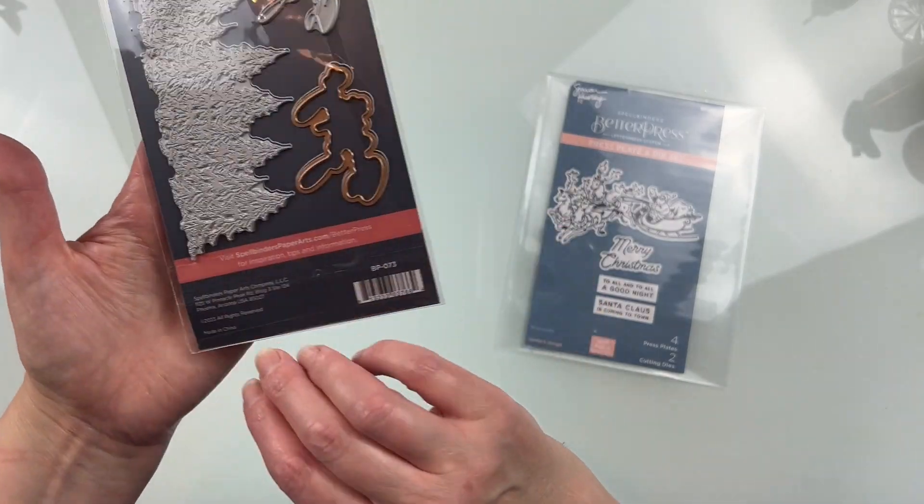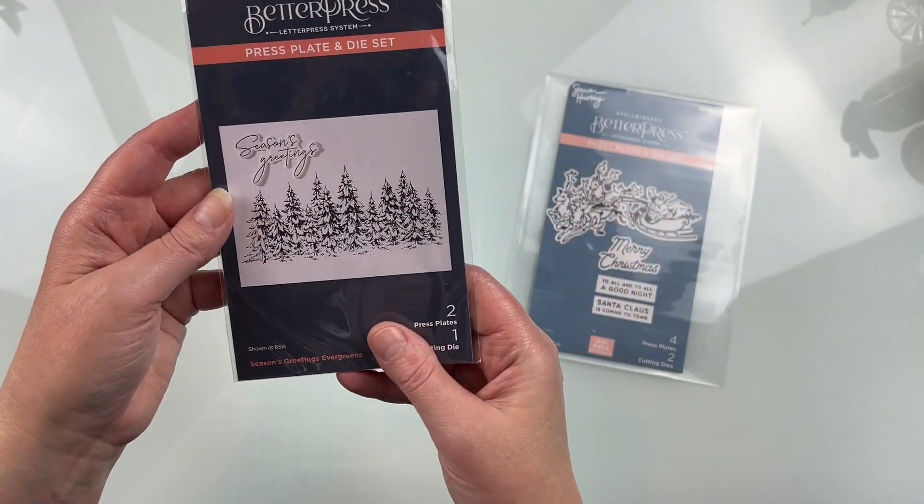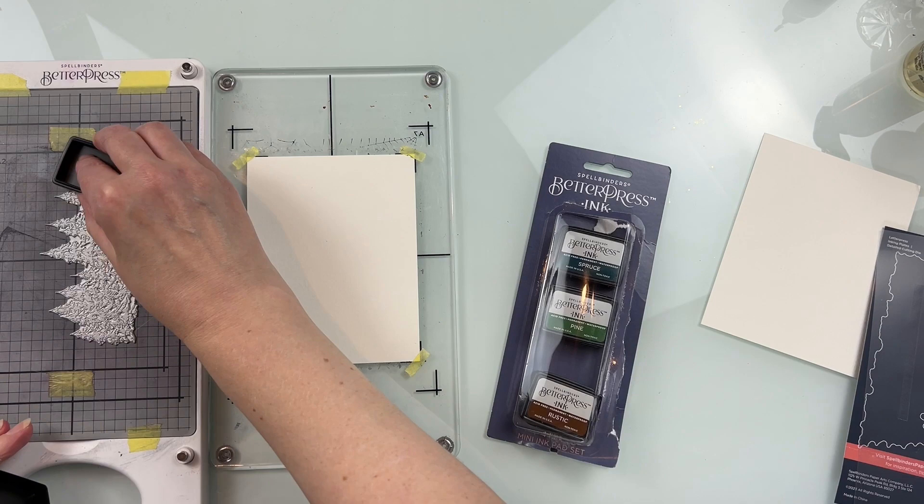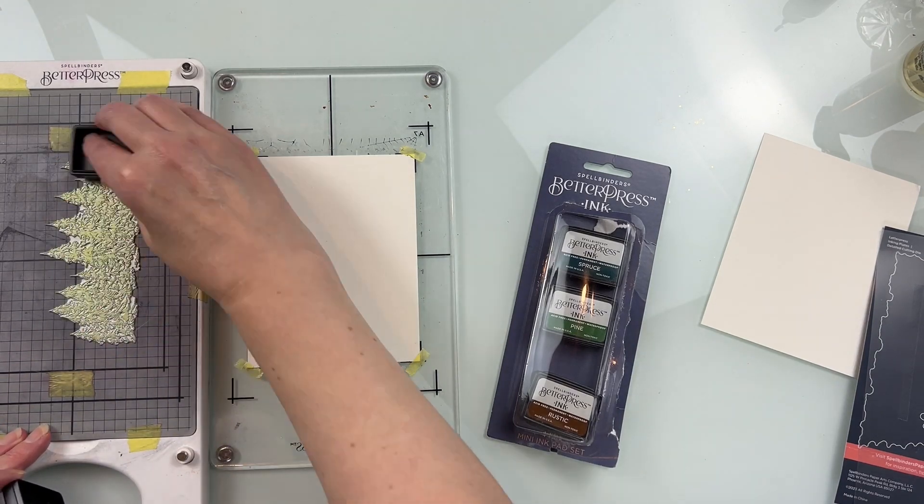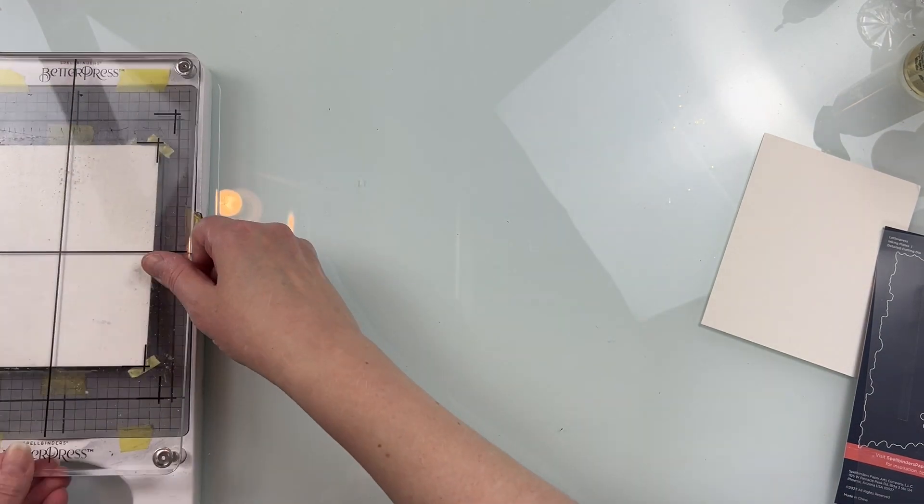This is the Season's Greetings Evergreens Press Plate Set from Spellbinders. There are two press plates in the set as well as one cutting die. The cutting die is for the Season's Greetings sentiment.